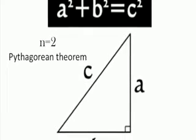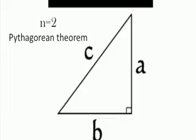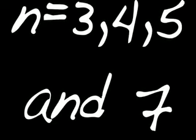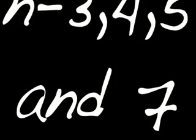N equal to 2 was already known thanks to Pythagoras and his theorem. N equal to 3, 4, 5, and 7 were proved during the 19th century, but still not for all positive integers.